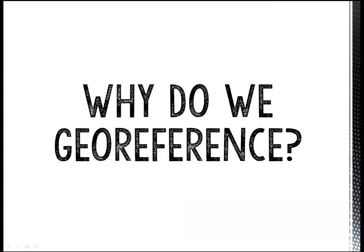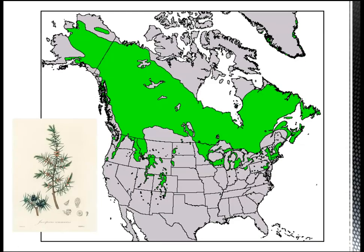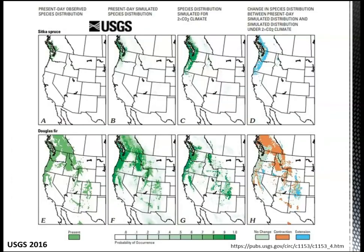So why do we bother putting points on maps? Knowing exactly where herbarium specimens were collected helps us understand the distributions of plants in time and space, as well as predict how those distributions will be affected by changes in climate and land use.